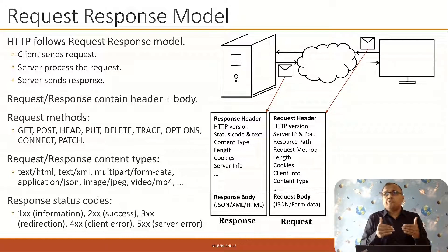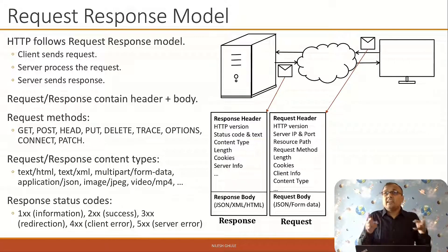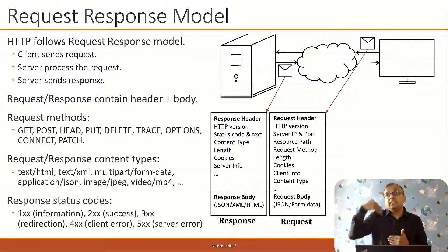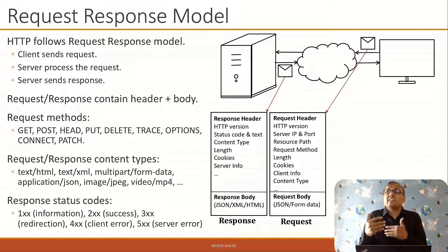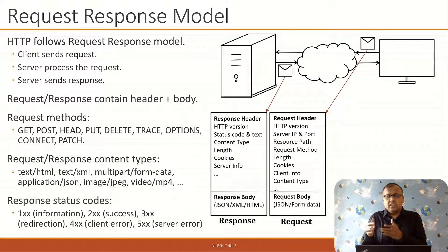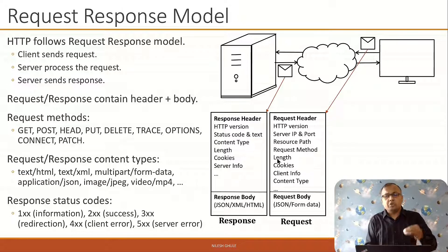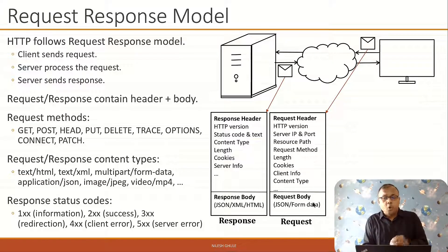OPTIONS tells you which request methods are supported by a URL on the server. There are a few more request methods: CONNECT establishes a two-way communication channel with the server, usually used with proxies, and PATCH is for updating partial data on the server.